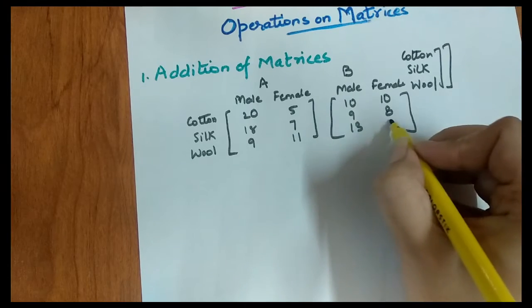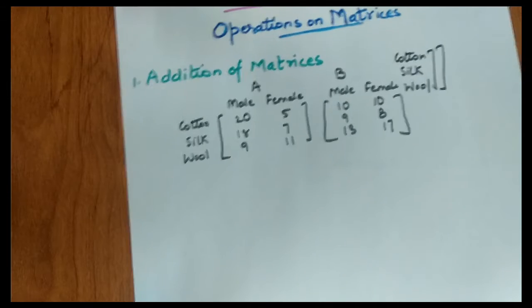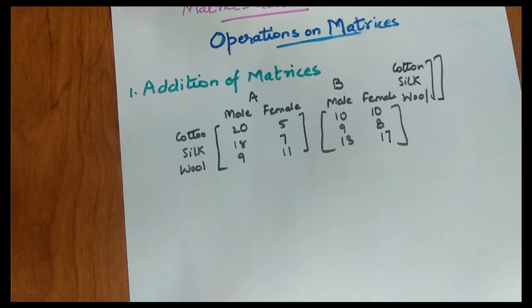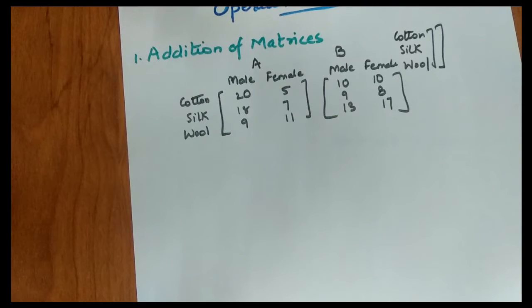We have considered one situation where values like 13 and 17 are given. The problem asks: how many total male workers and how many total female workers work on the basis of each material, regardless of which godown they work in? In that particular scenario, we perform matrix addition.